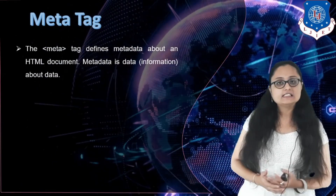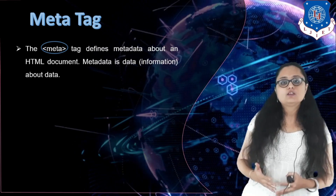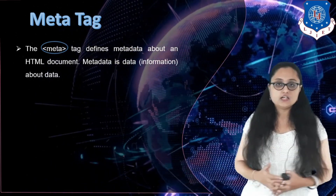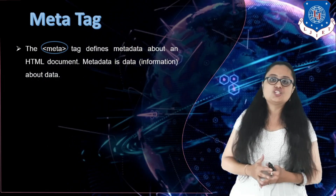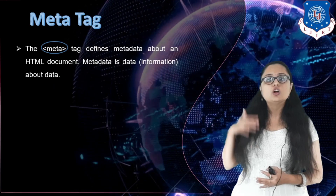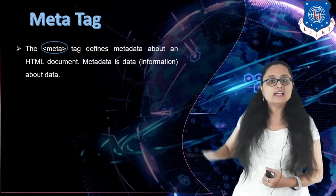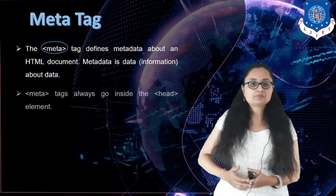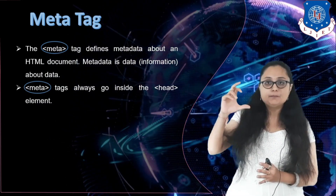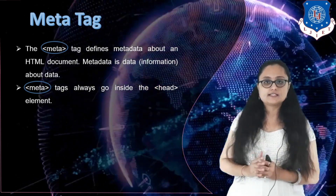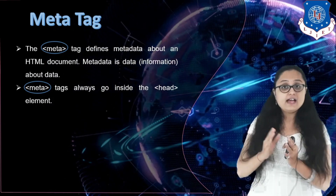The meta tag defines metadata about an HTML document. Metadata is data about data. Whenever you use a meta tag, it provides information about your HTML document — for example, giving information to SEO about your document. We know that an HTML document is divided into two parts: the head part and the body part. Whatever information you want to give about the HTML document goes into the head part.